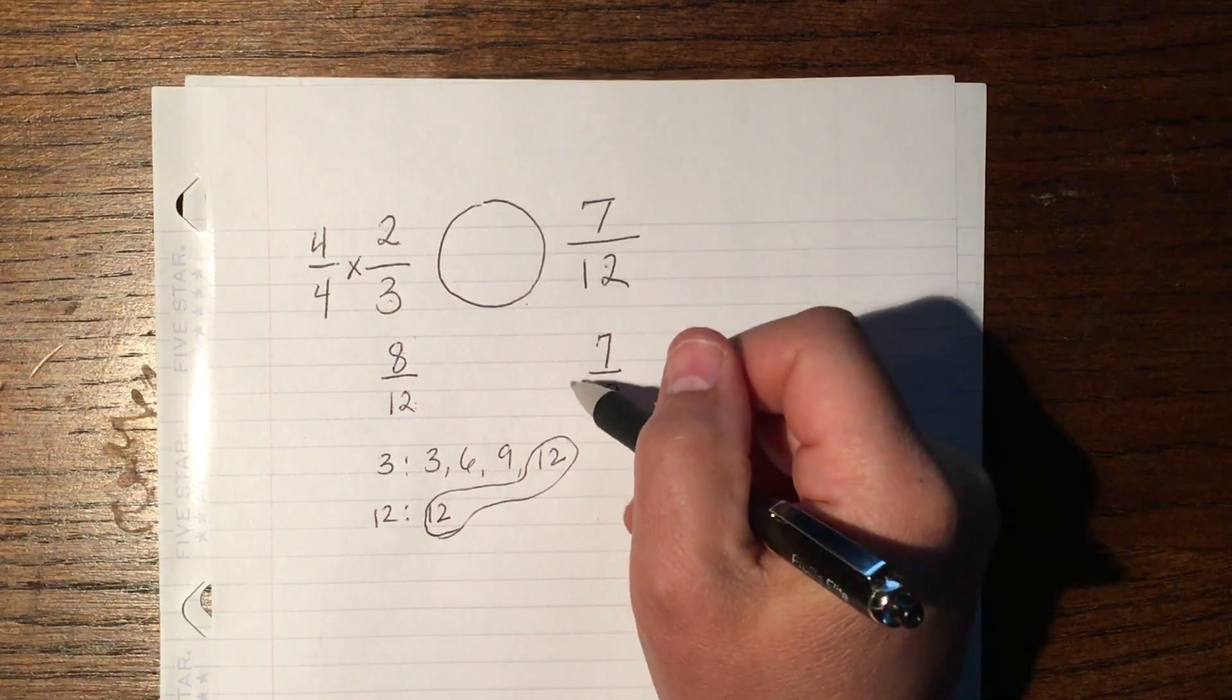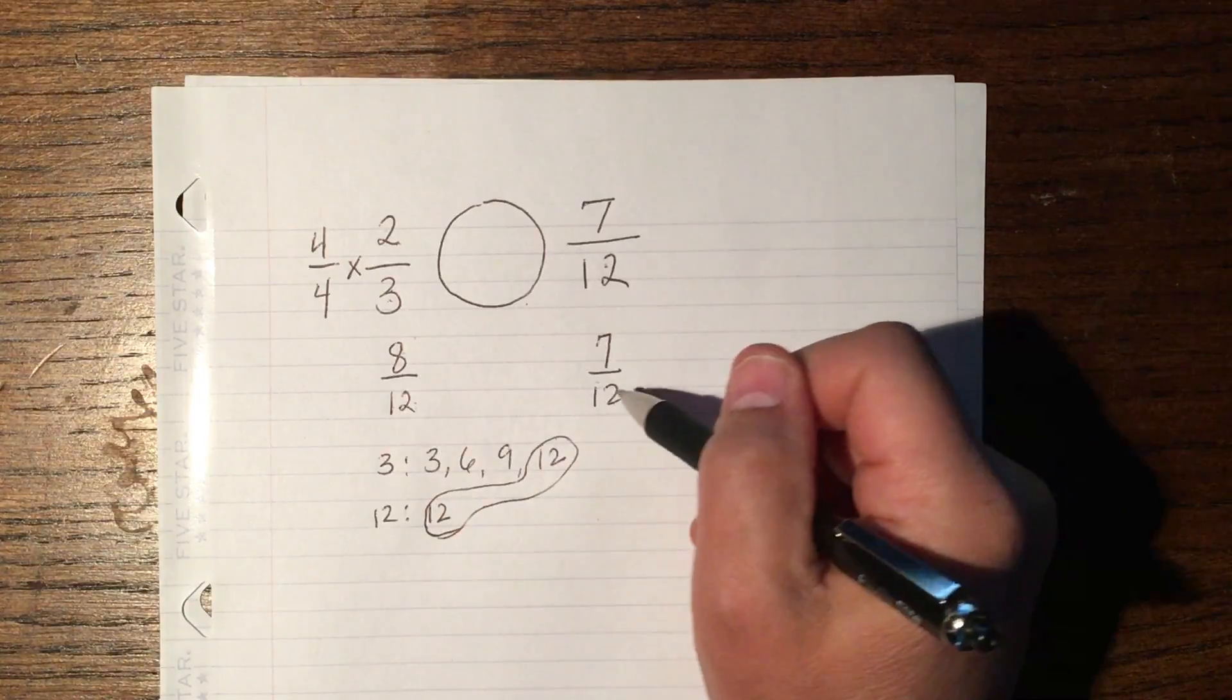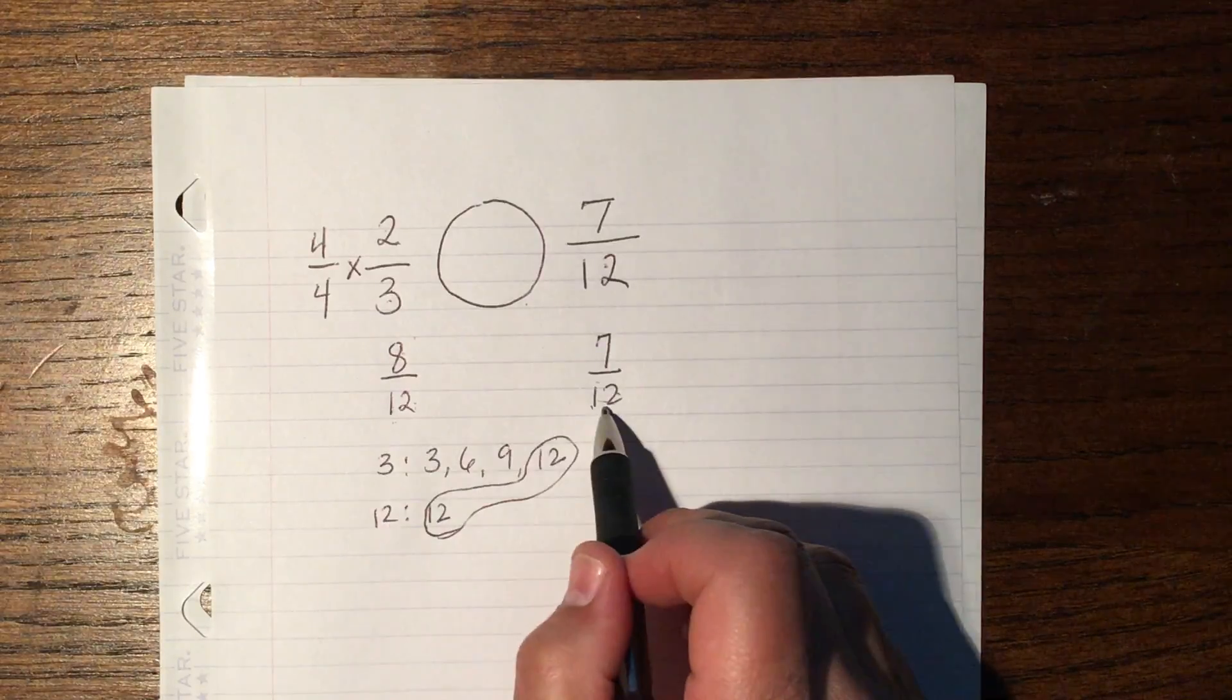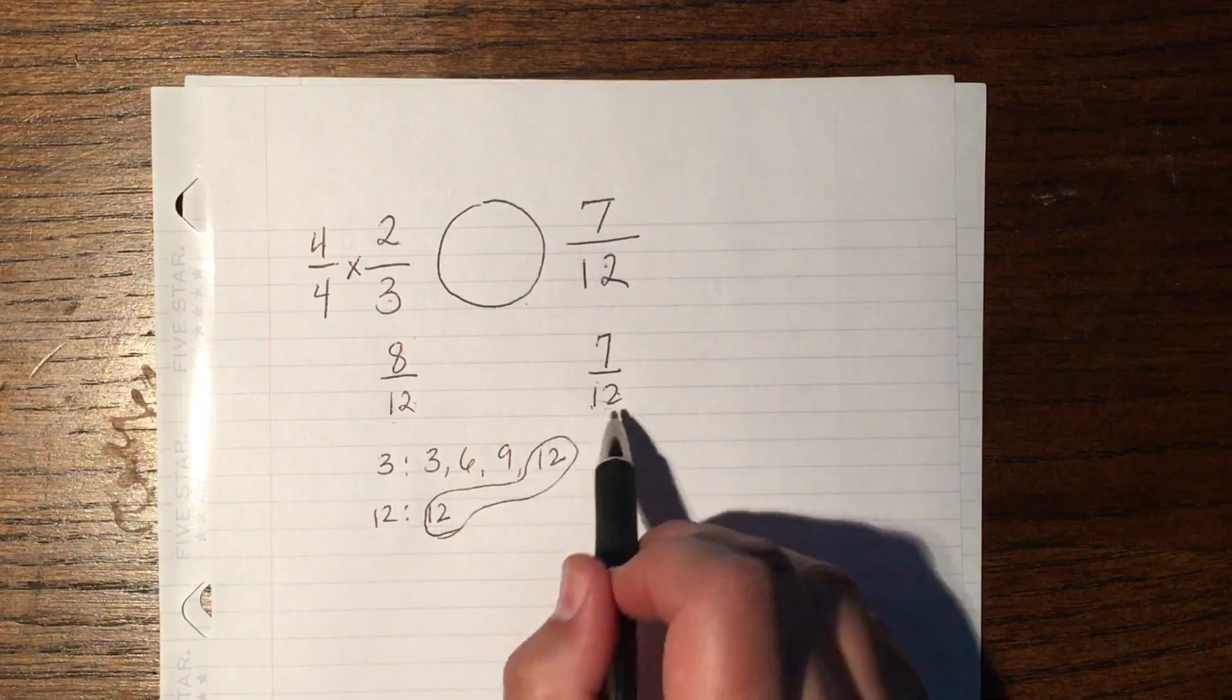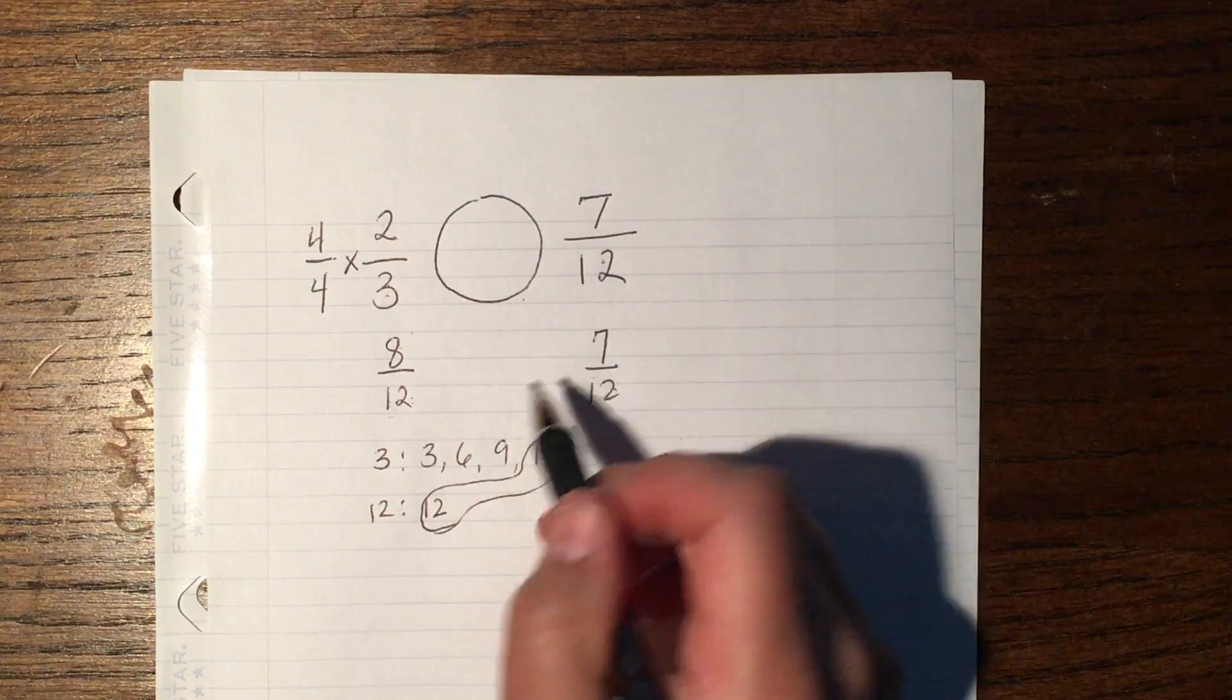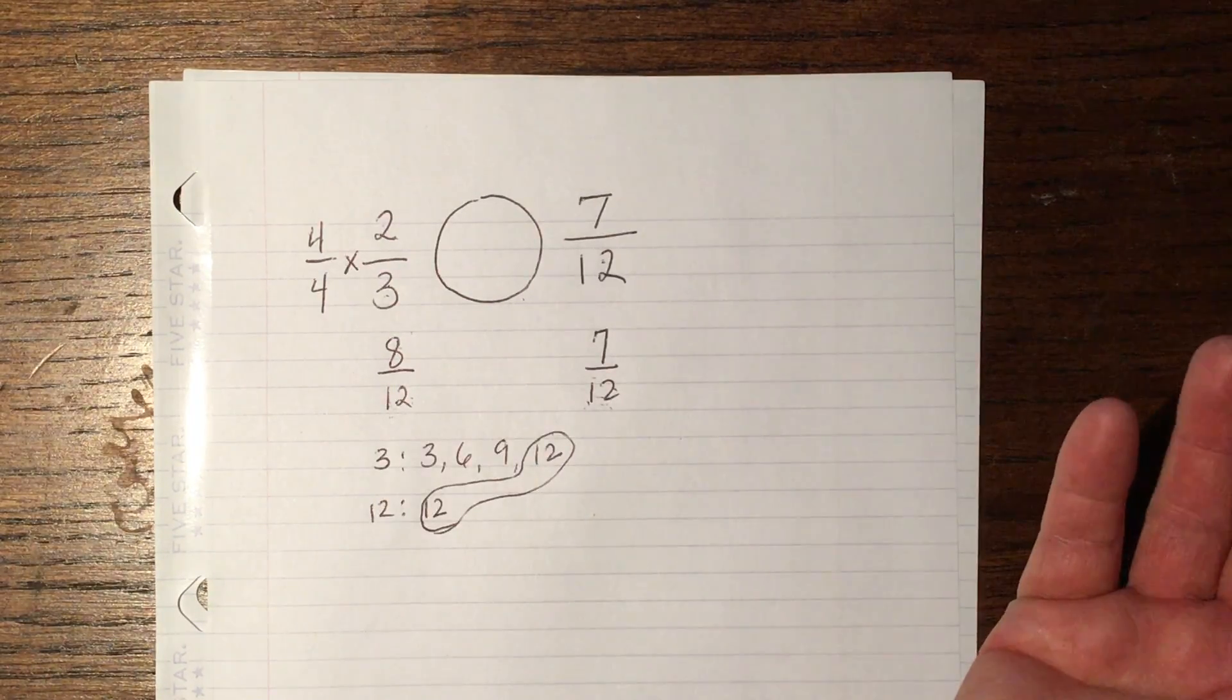Now I can compare these two, and I can see, now that I have equal denominators, I know that I'm dealing with the same size pieces, the same size fractional parts. So now I just have to count which one has more parts.